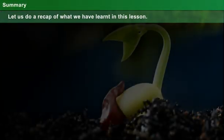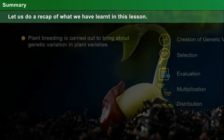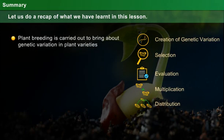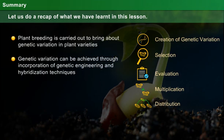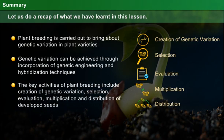Summary: Plant breeding is carried out to bring about genetic variation in plant varieties. Genetic variation can be achieved through incorporation of genetic engineering and hybridization techniques. The key activities of plant breeding include creation of genetic variation, selection, evaluation, multiplication, and distribution of developed seeds.